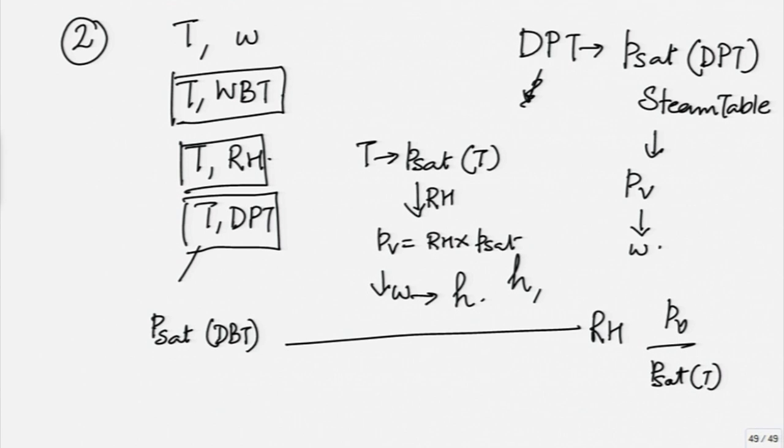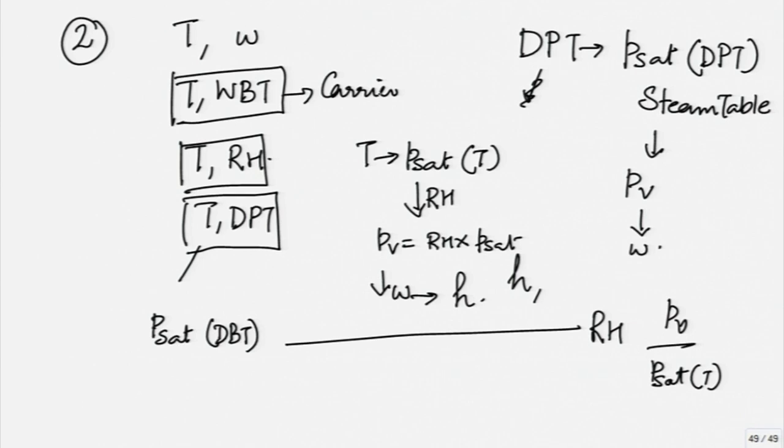Similarly, T and WBT, I will use the carrier equation. I will use the wet bulb temperature to get P sat at wet bulb temperature. Again, I will use the steam tables and get my PV actual. Once I know PV actual, I know omega, I know H and using T I know PV sat and hence I get relative humidity.